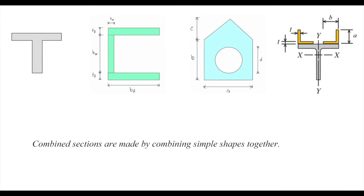Now we talked about simple shapes. What if we want to determine section properties for combined sections — like sections consisting of a circle, a triangle, and a rectangle combined together? In that case, we need to use the parallel axis theorem.